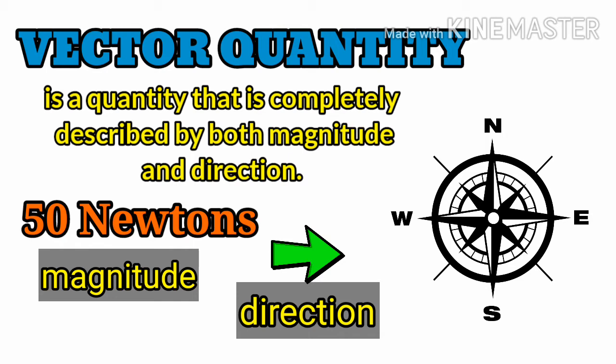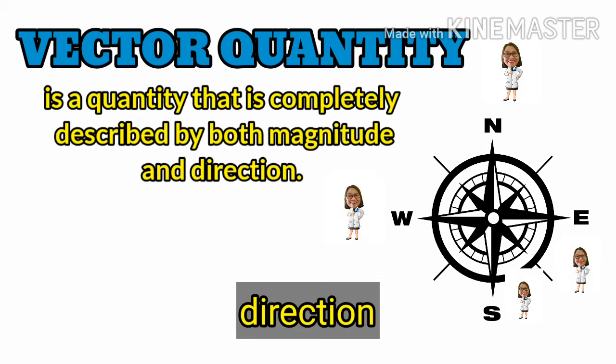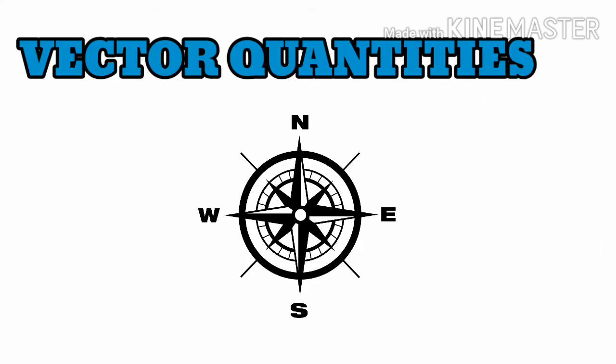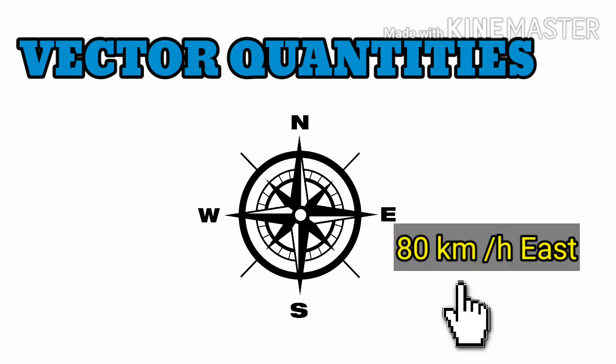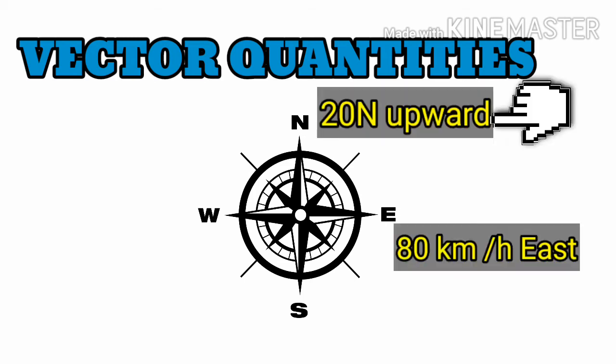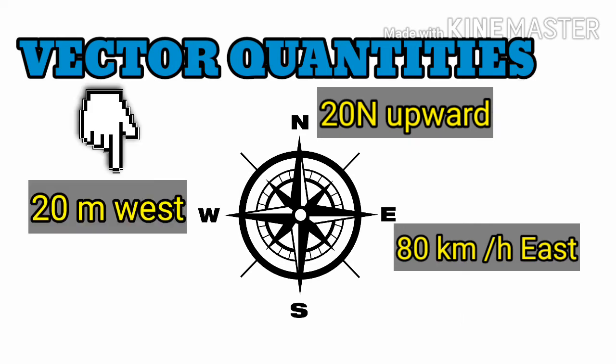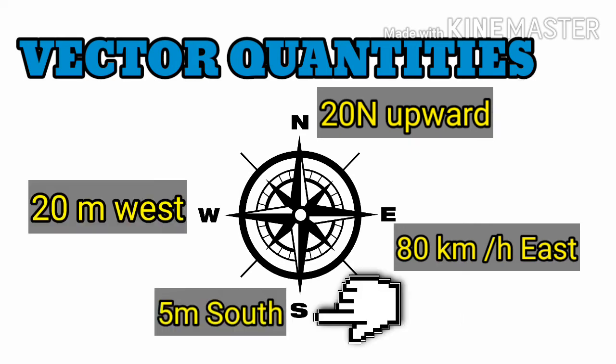by both magnitude and direction. For direction, we have north, south, east, and west. The following are examples of vector quantities: 80 kilometers per hour east, 20 newtons upward, 20 meters west, 5 meters south.